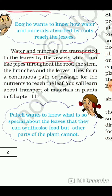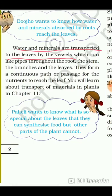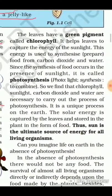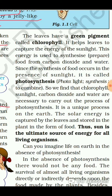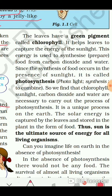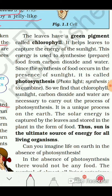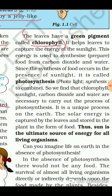The answer to why leaves can synthesize food but other plant parts cannot is: leaves only have chlorophyll, and the chlorophyll helps to store solar energy. The leaves have a green pigment called chlorophyll — this is the definition of chlorophyll. If asked in the exam what is chlorophyll, you write: the leaves have a green pigment called chlorophyll.